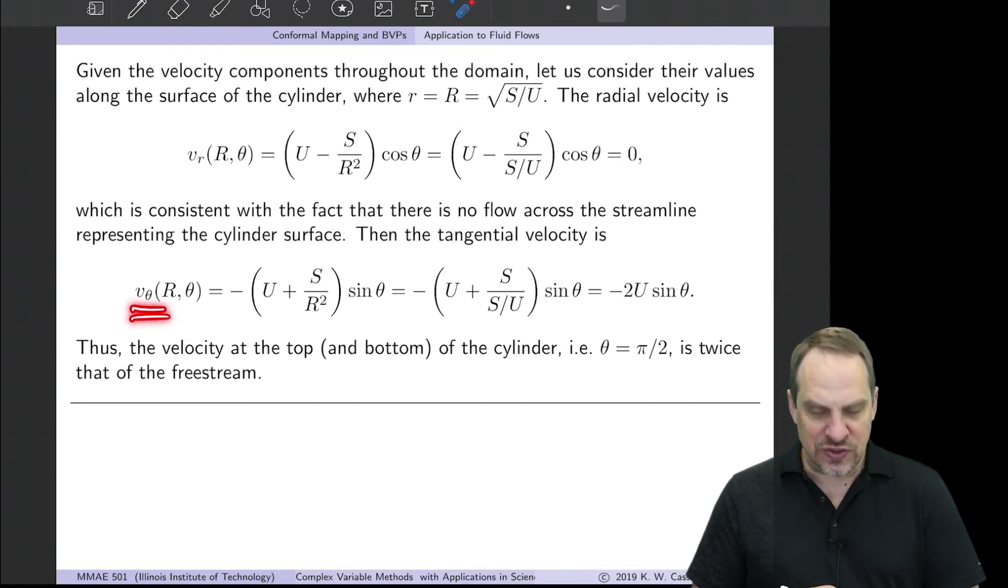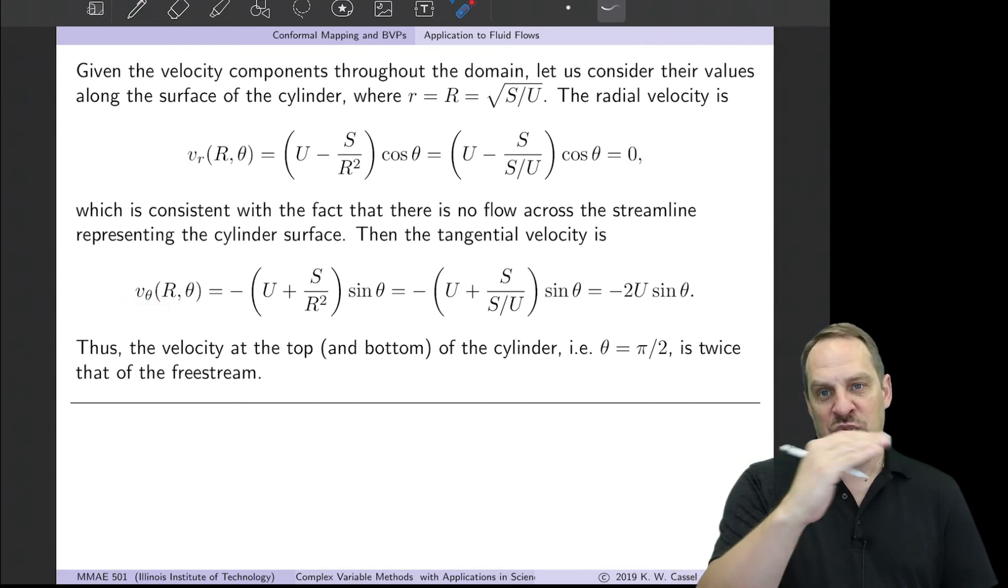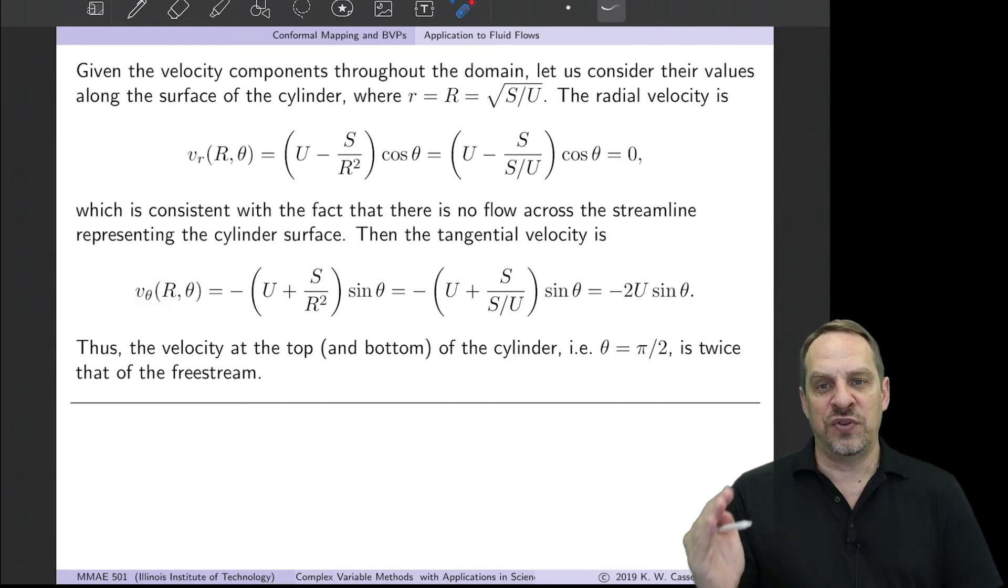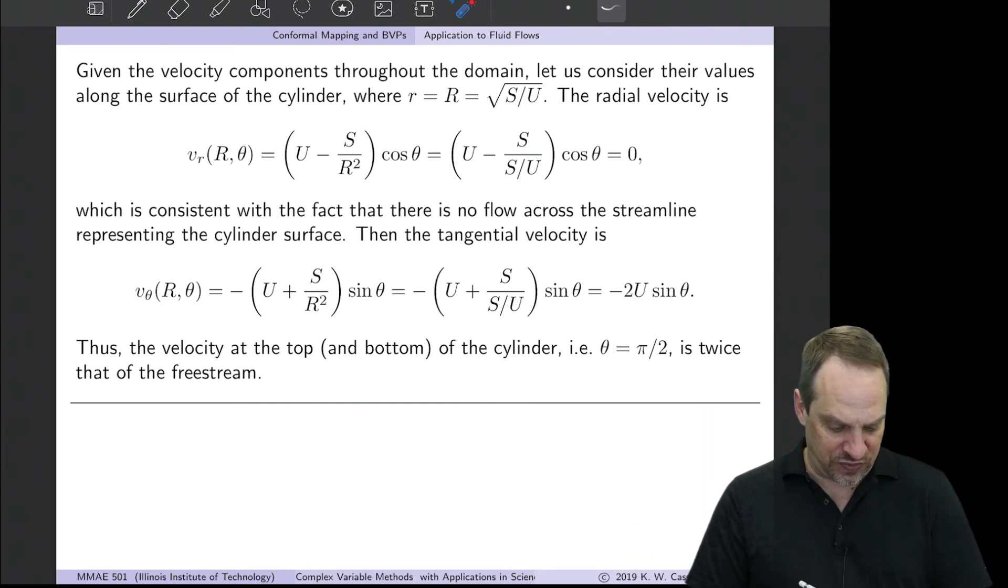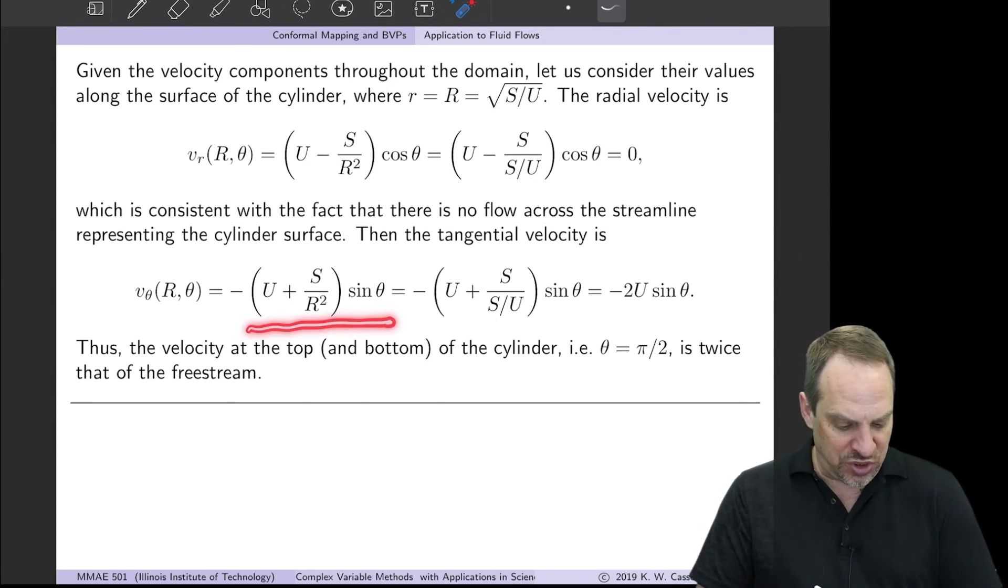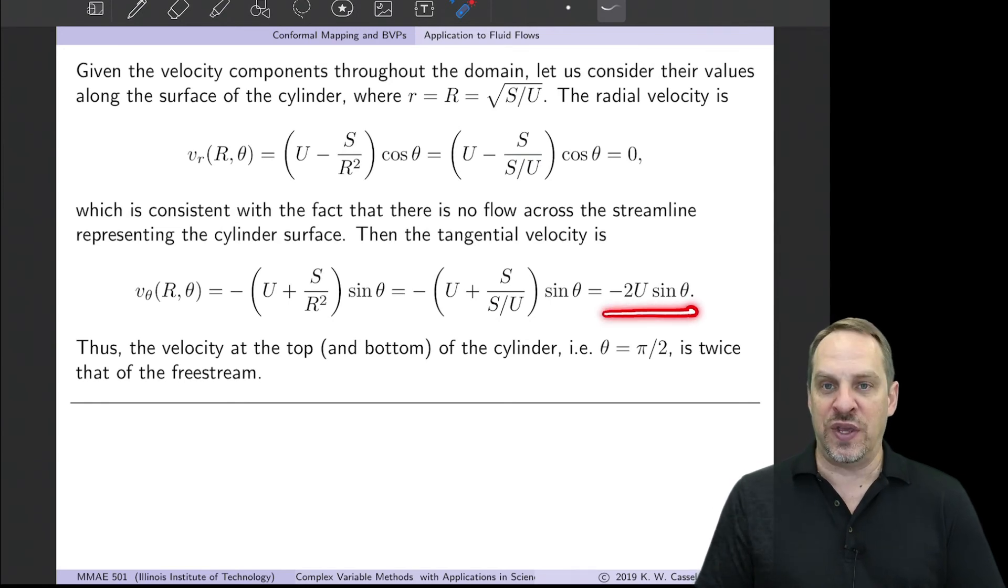Now let's look at vθ. This is the velocity, we call it the slip velocity, of the fluid as it passes over the surface and under the surface of the cylinder, but right at the surface. So again, take the general expression for vθ. Put in r as R, and R is √(S/U). And we find that that's equal to -2U sin θ.